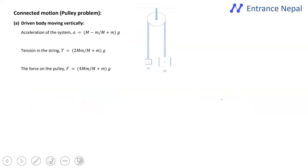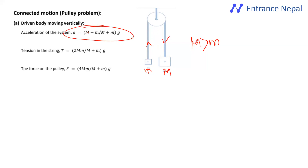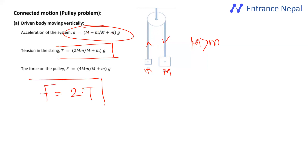For a pulley (Atwood machine) connected with masses M and m, if M is greater than m, the acceleration of the system is: a = (M − m)/(M + m) × g. The tension in the string is: T = 2Mm/(M + m) × g.